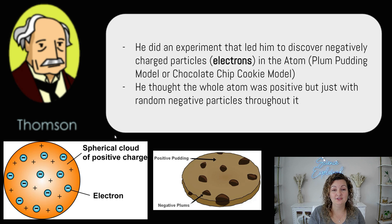We have Thompson that came along after him and he did an experiment that let him discover we have negatively charged particles and he called those electrons. So he also said the model was called the plum pudding model. This is much easier nowadays if we think of it as a chocolate chip model or chocolate chip cookie, right? So this is what his look like.